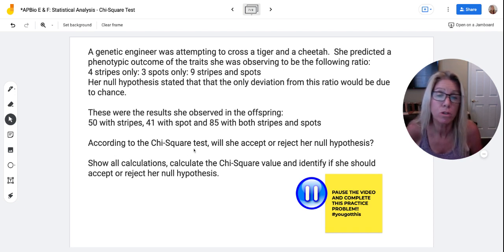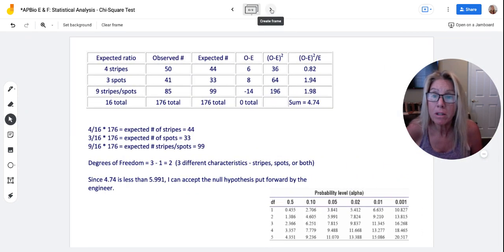So according to the chi-square test, will she accept or reject her null hypothesis? So when you make your table, this was the ratio, 4 to 3 to 9 out of 16.